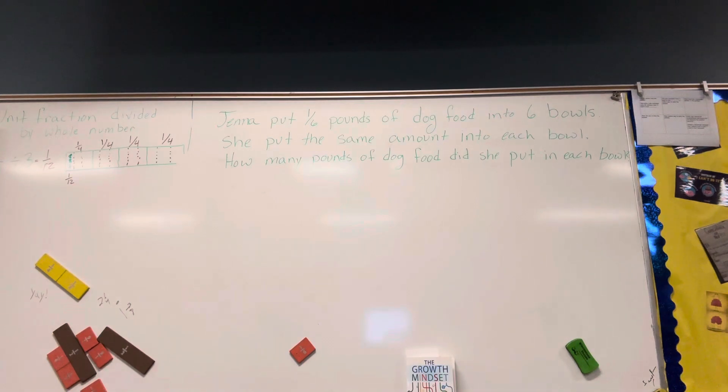Jenna put one-sixth a pound of dog food into six bowls. She put the same amount into each bowl. How many pounds of dog food did she put in each bowl?